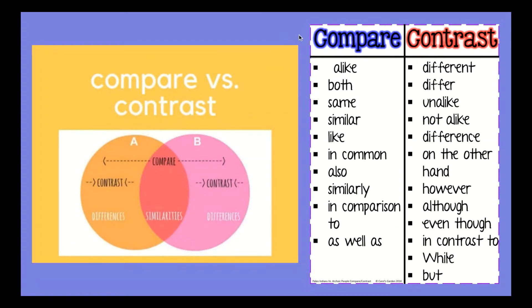To the right side, we have a word bank with words that indicate when we're going to compare — tell what is the same — and when we're going to contrast — tell what is different. For compare, words like: both, similar, in common, in comparison to. For contrast: unalike, difference, on the other hand, however.